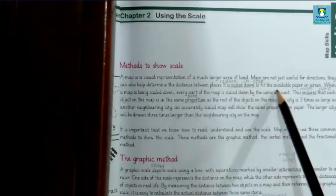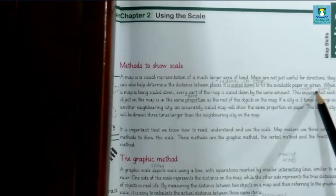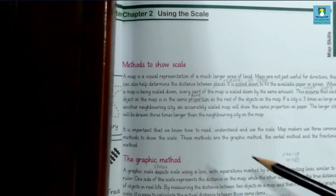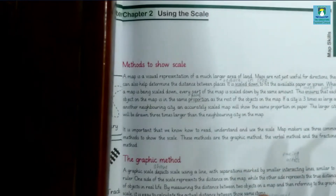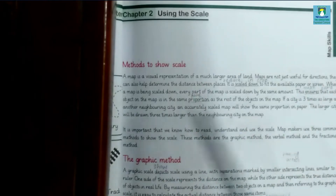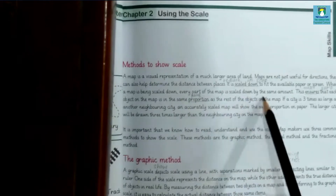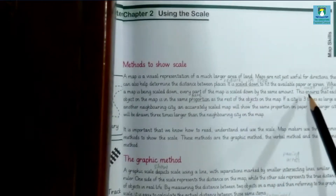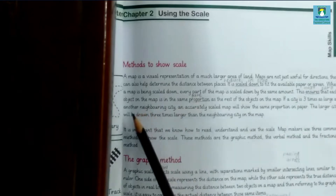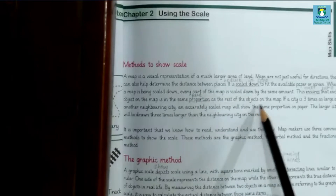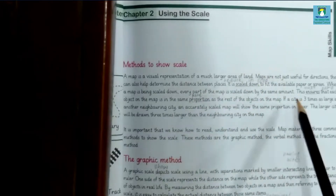Maps are scaled down, meaning reduced in size, to fit the available paper or screen. For example, the distance between Peshawar and Lahore is very large in real life, but when shown on the map it is reduced in size. When a map is scaled down, every part is scaled down by the same amount, ensuring each object is in the same proportion as the rest.